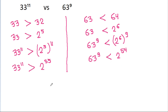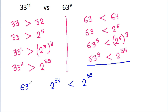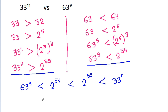And we know that 2 power 54 will be less than 2 power 55. And 63 power 9 is less than 2 power 54, and 33 power 11 is greater than 2 power 55. That means 63 power 9 will be less than 33 power 11.